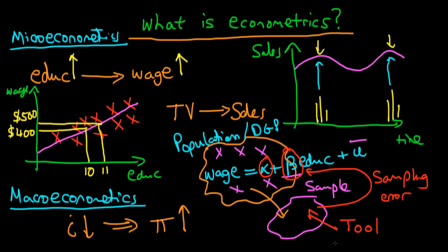The idea with econometrics is that we want to use tools which reduce this sampling error as much as possible, making our estimates on the sample as close to the true population values as possible. By doing so, that allows us to make some sort of inference about what's going on in the population — for example, is the true effect of education on wages $100 per extra year of education?